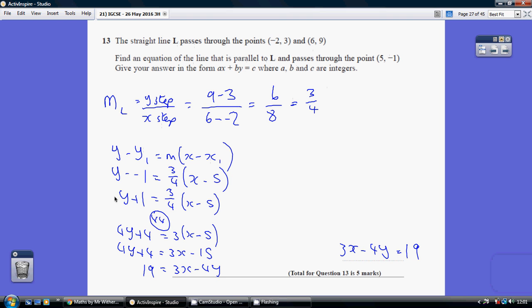So y minus minus 1 equals 3 quarters times x minus 5. Just tidying up the left-hand side, y plus 1 equals 3 quarters x minus 5. Because I've got to give my answer in this integer, whole number format, it makes sense to undo this dividing by 4 at the moment, so basically get rid of the 3 quarters.